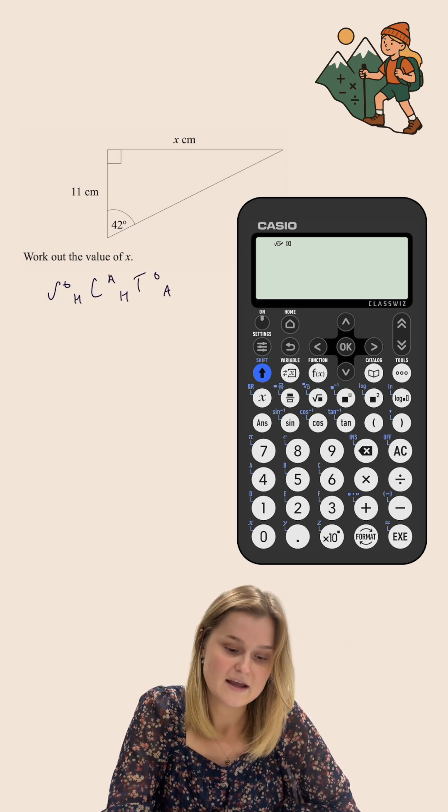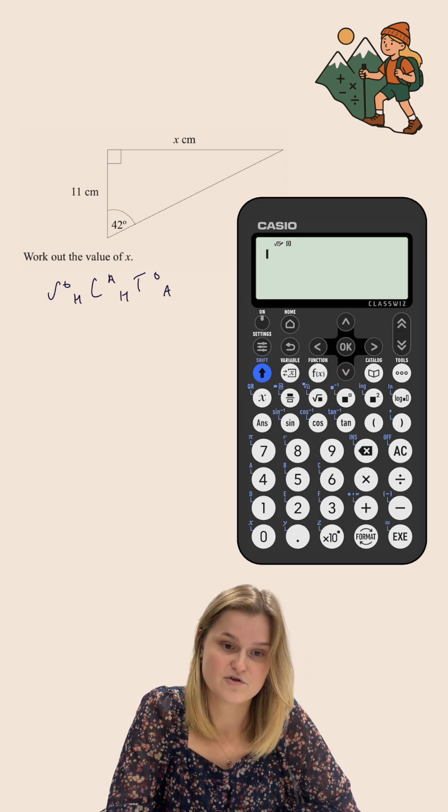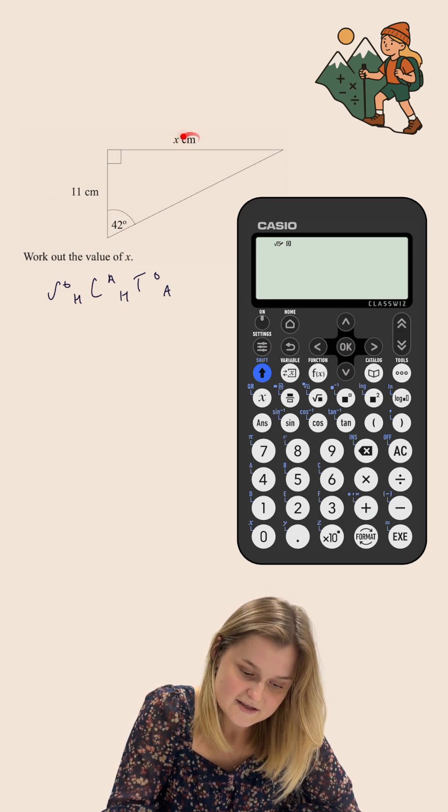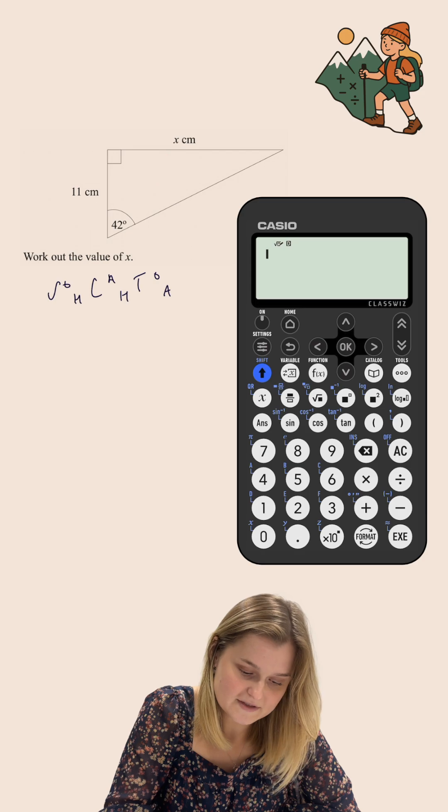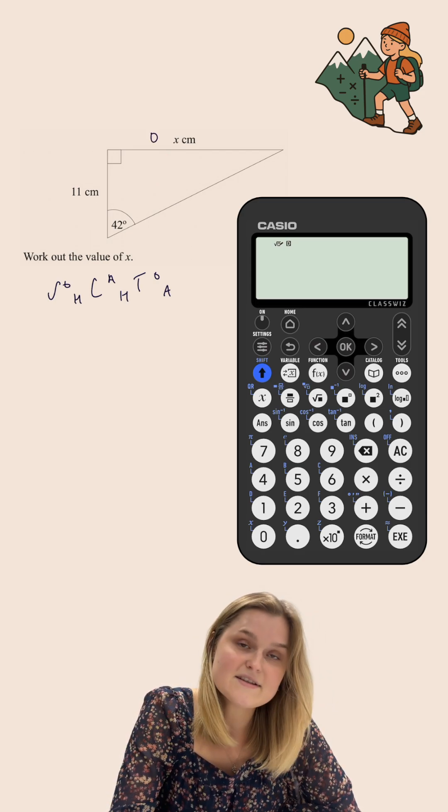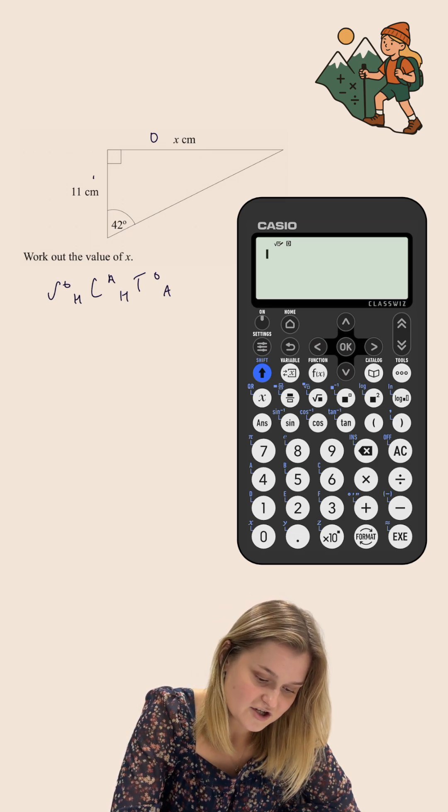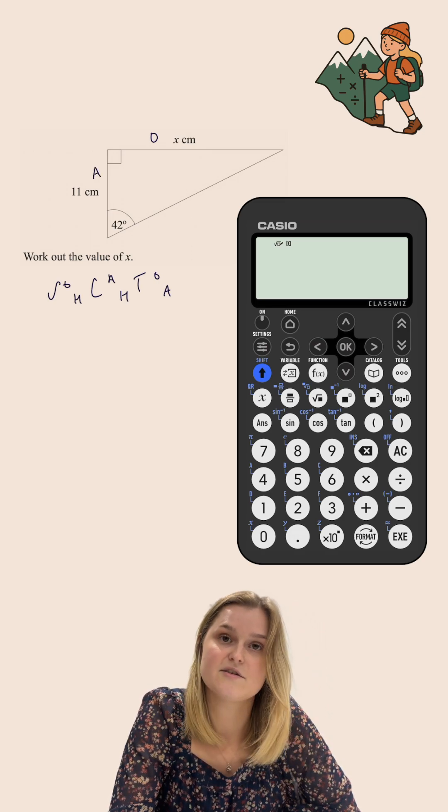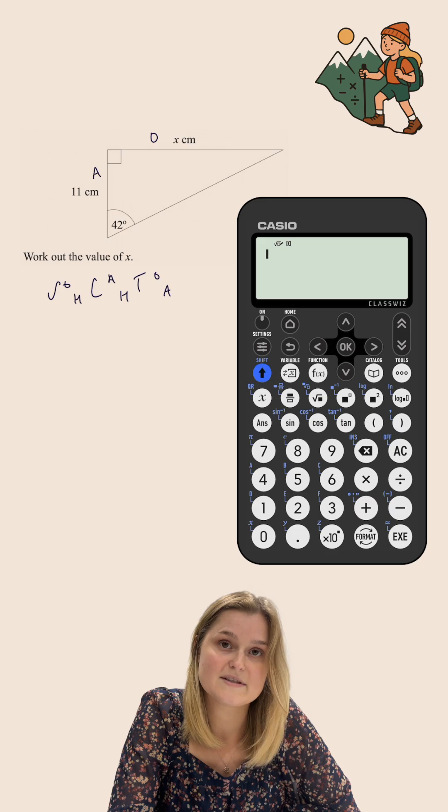Now the first thing I'm going to do is label the sides on my right angle triangle. Now x, this side that I'm trying to find, is opposite to the 42 degree angle and so I'm going to label that as the opposite. And my 11 centimetre side here is the adjacent. It's next to the 42 degree angle and it is not opposite to the right angle.